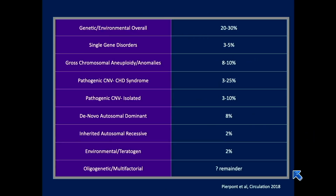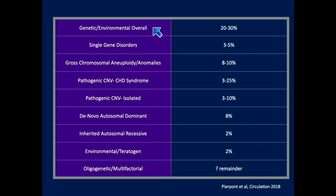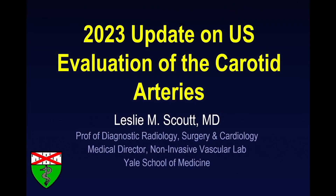As a good point of reference, I want to draw your attention to this article in 2018 by Pierpont — it's a comprehensive article on the genetic underpinnings of CHD in general. Based on what was known in 2018, genetic and environmental factors overall probably only contribute about a third, or slightly less, of the etiology.